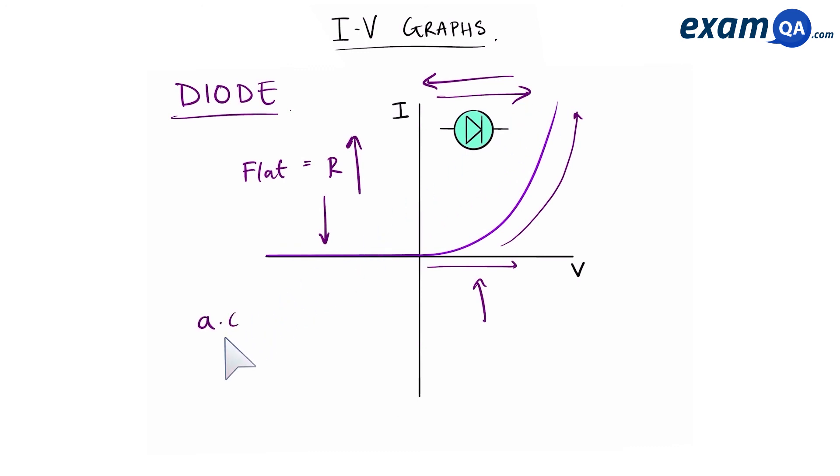One use of a diode is to turn an AC into a DC, which means an alternating current into a direct current.